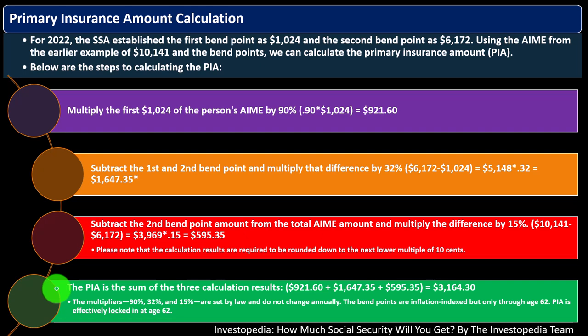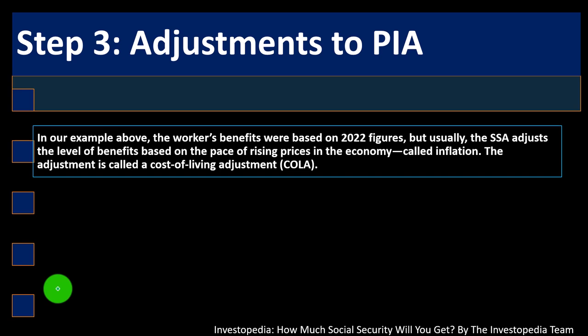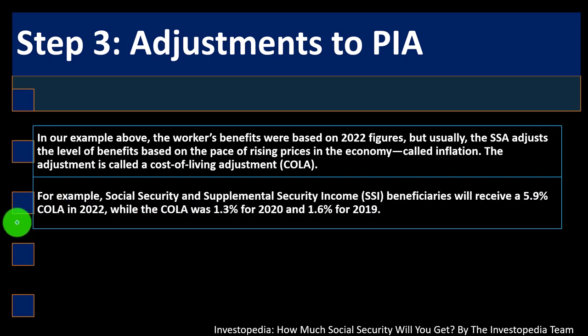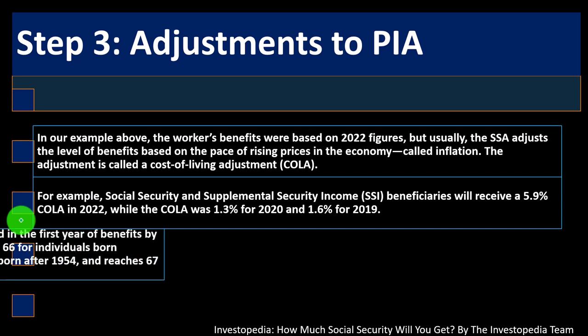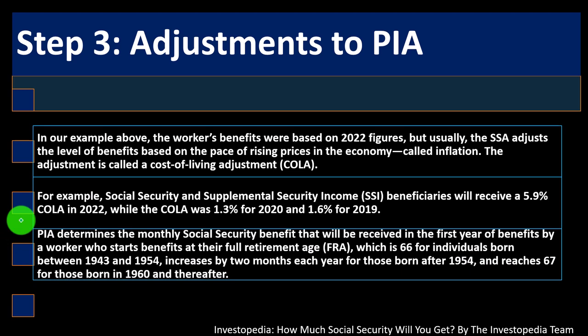Number three: adjustments to PIA. In our example above, the workers' benefits were based on 2022 figures. But usually the SSA adjusts the level of benefits based on the pace of rising prices in the economy — called inflation. This adjustment is called a cost of living adjustment, or COLA. For example, Social Security and SSI beneficiaries received a 5.9% COLA in 2022, while the COLA was 1.3% for 2021 and 1.6% for 2019. It's a lot larger now because we're experiencing inflation, so they have to apply a larger adjustment.